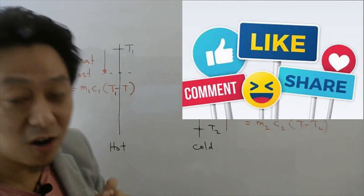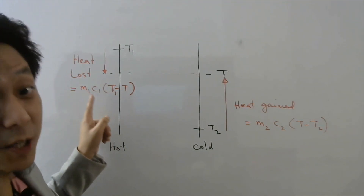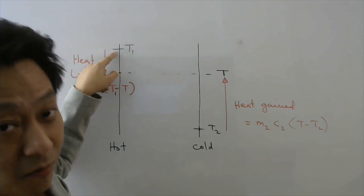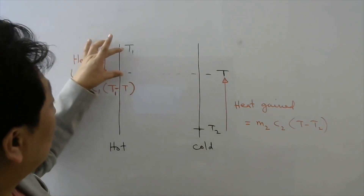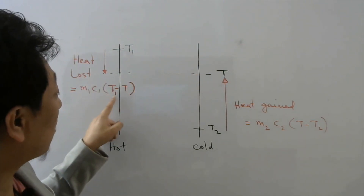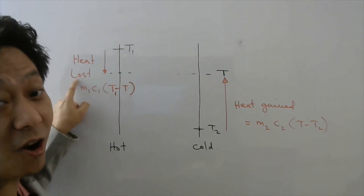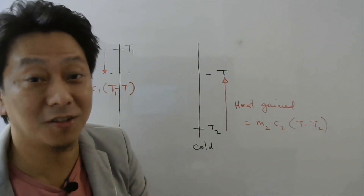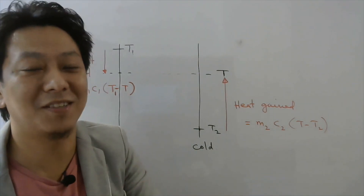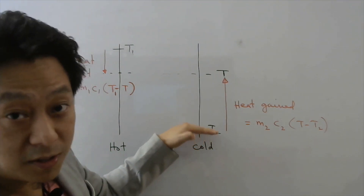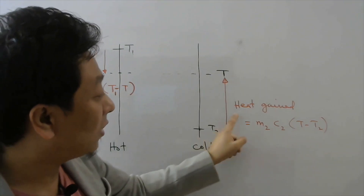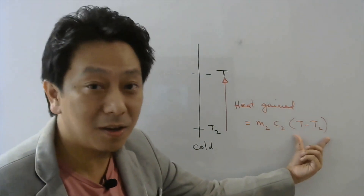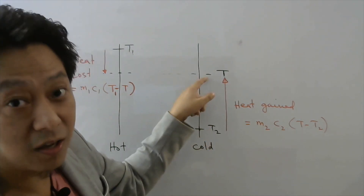The heat lost by the hot body is: mass × specific heat × temperature difference. Initially the hot body was at t1, finally at t, so the difference is t1 minus t — always write bigger minus smaller, since heat lost must be positive. Similarly, heat gained by the cold body is: mass × specific heat × (t minus t2), since the cold body's temperature rose from t2 to t.